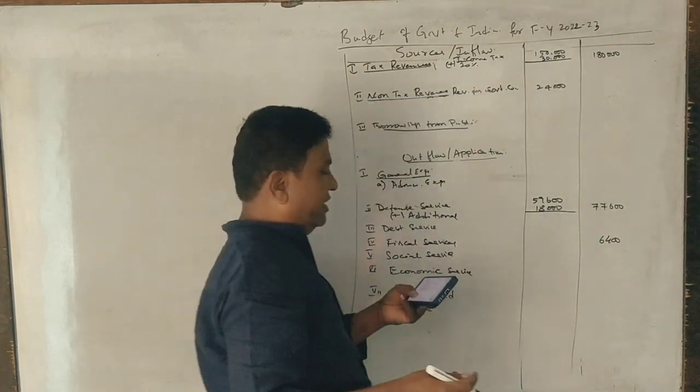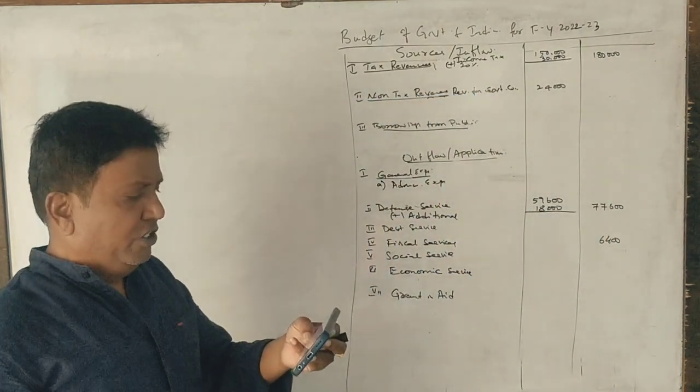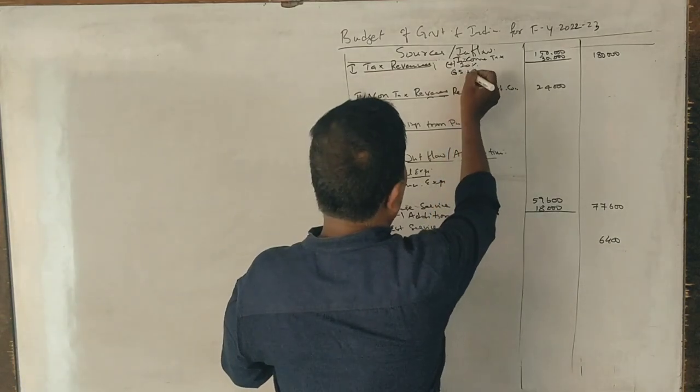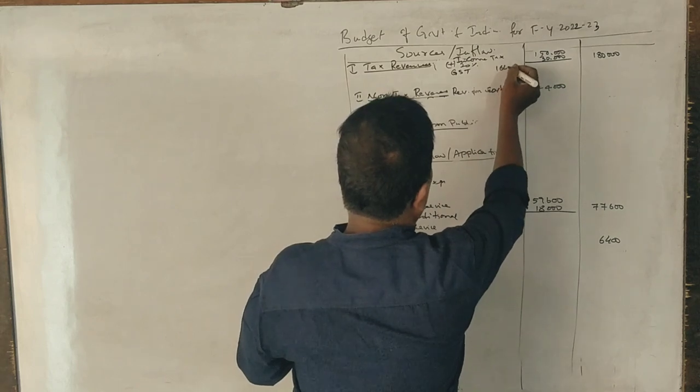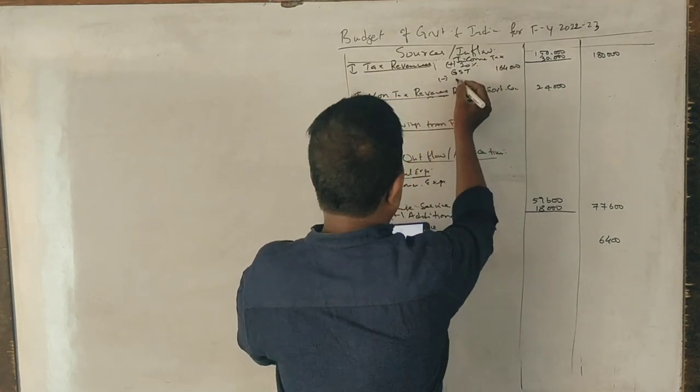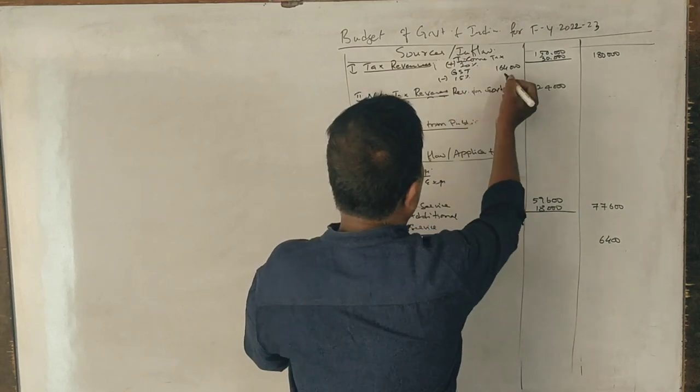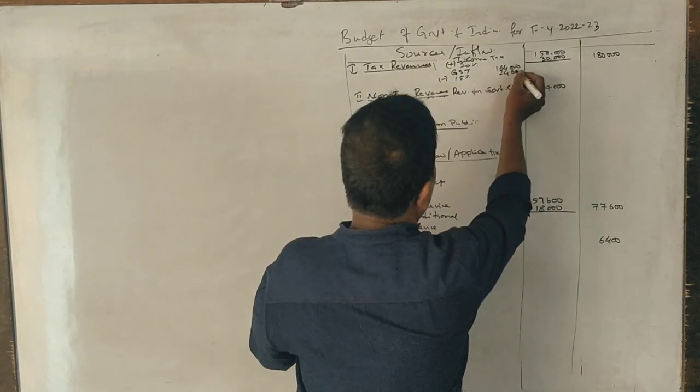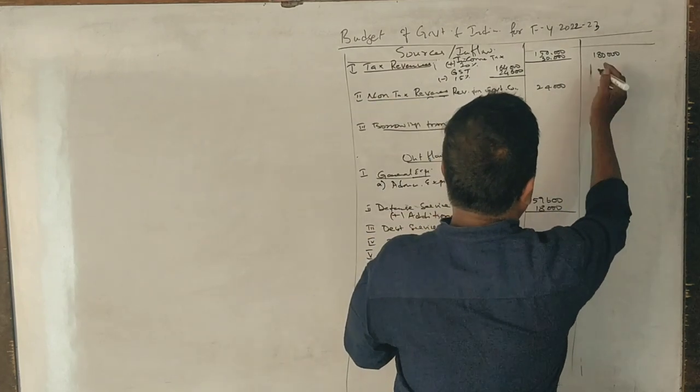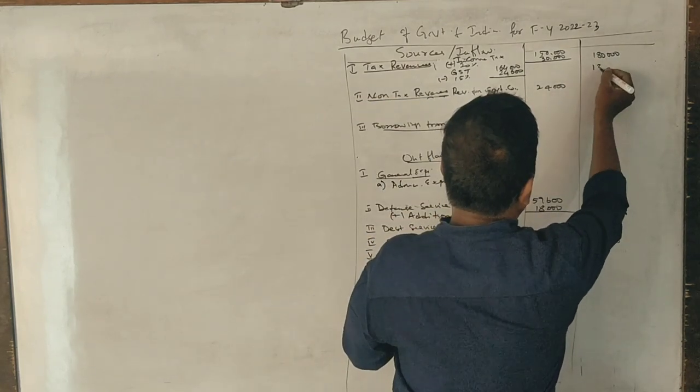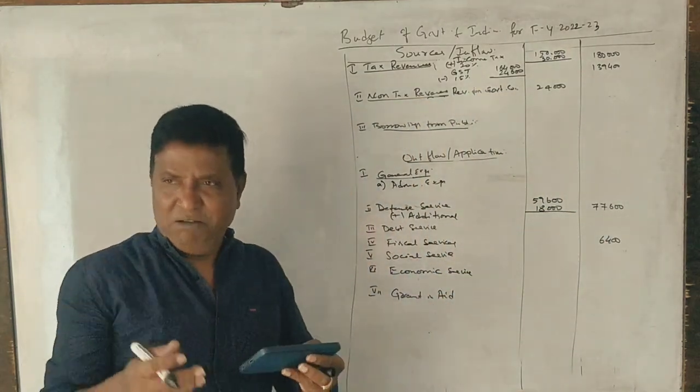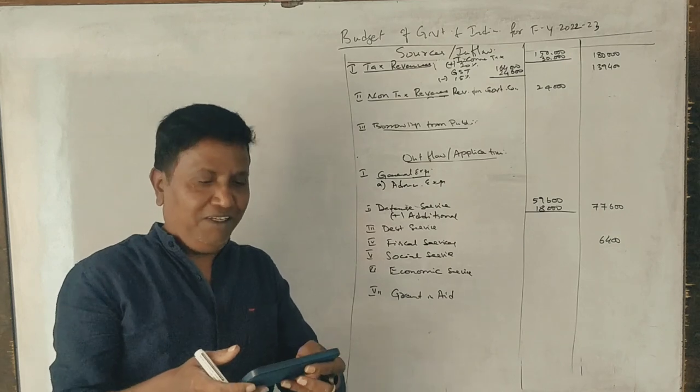Fifth adjustment: GST is likely to come down by 15%. GST is 1,64,000. Fifteen percent is 24,600. So 1,64,000 minus 24,600 equals 1,39,400. That's it.